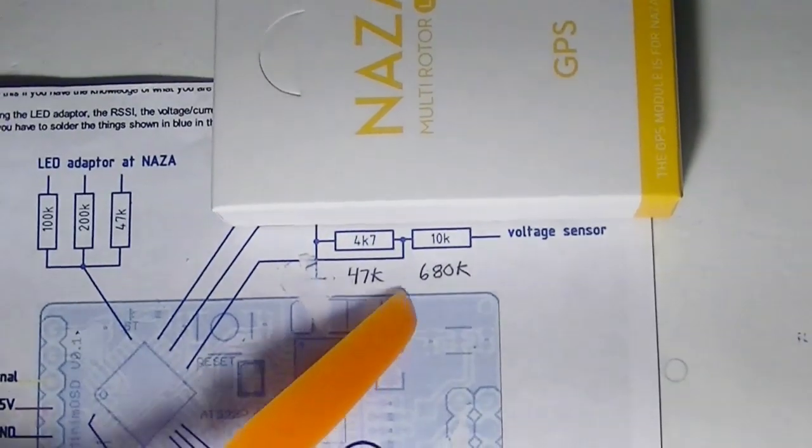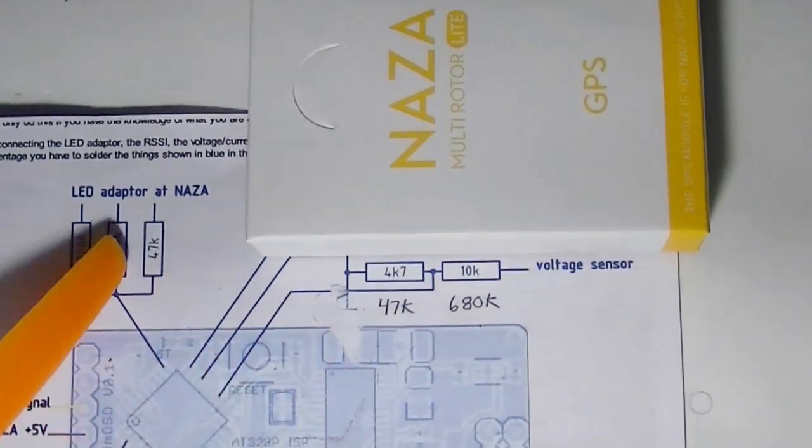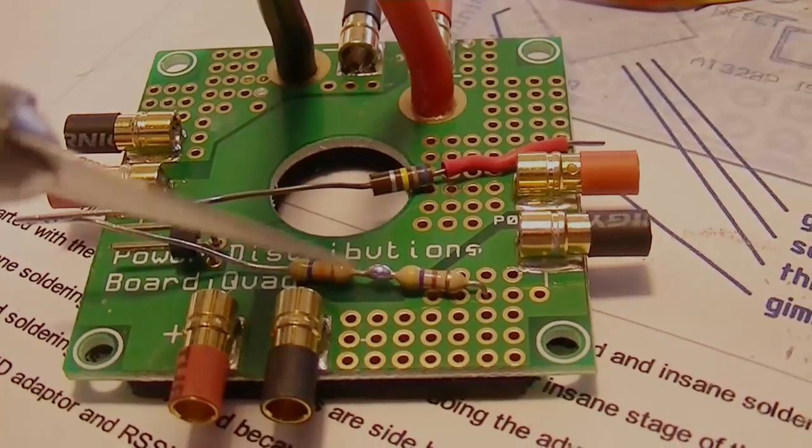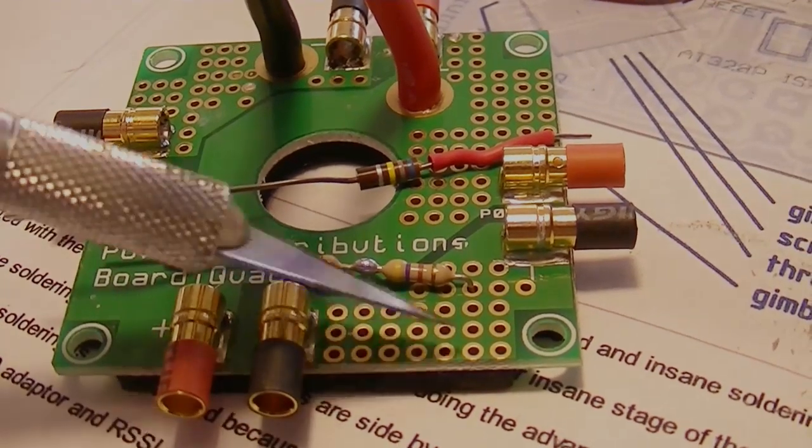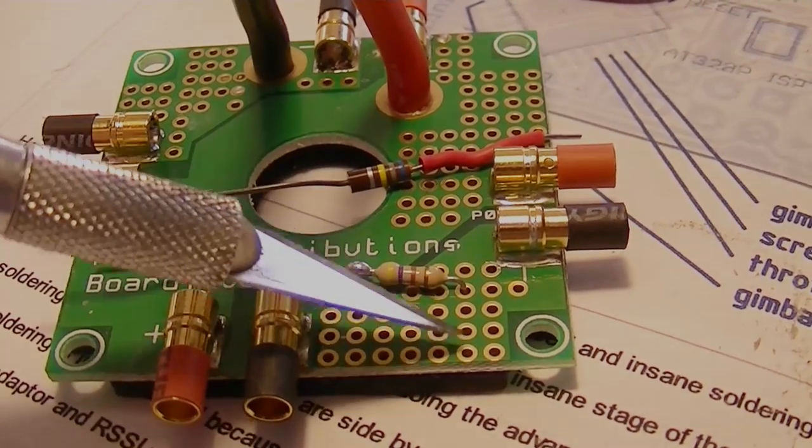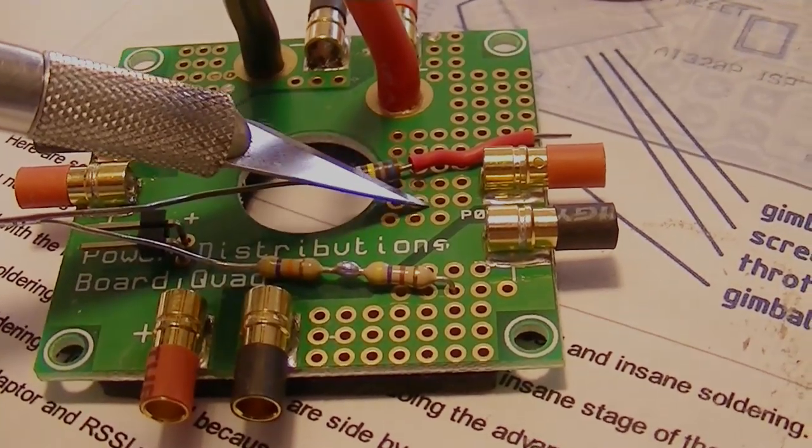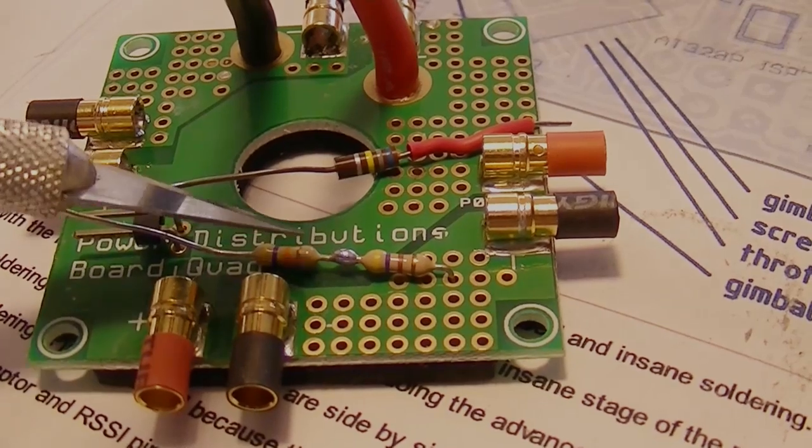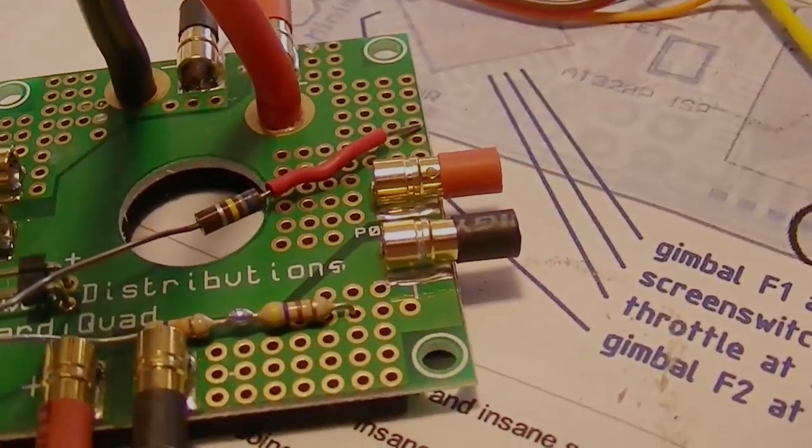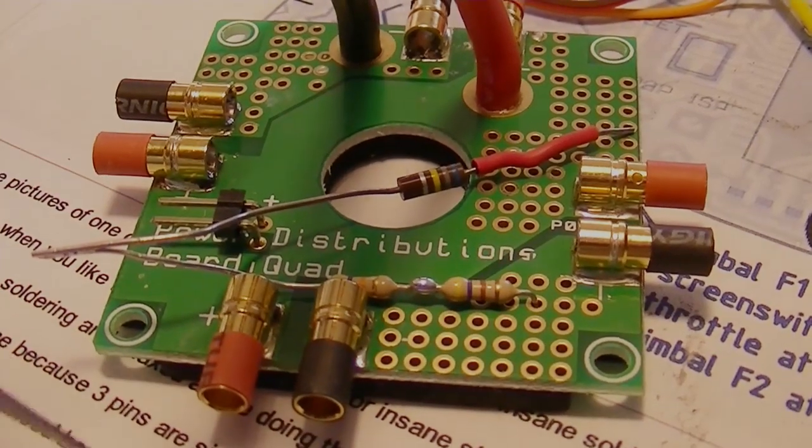Let's talk about the voltage sensor mod first and then we'll get into the lead adapter mod. The power distribution board has some good little lands I can solder things to and one plane over here is ground and this plane over here is five volts.